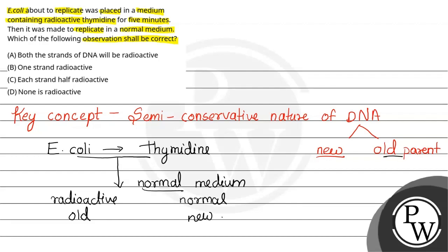This is how semi-conservative nature of DNA is demonstrated. So one strand will be radioactive. Our final answer is option B, one strand radioactive. Hope you understand it well. Best of luck.